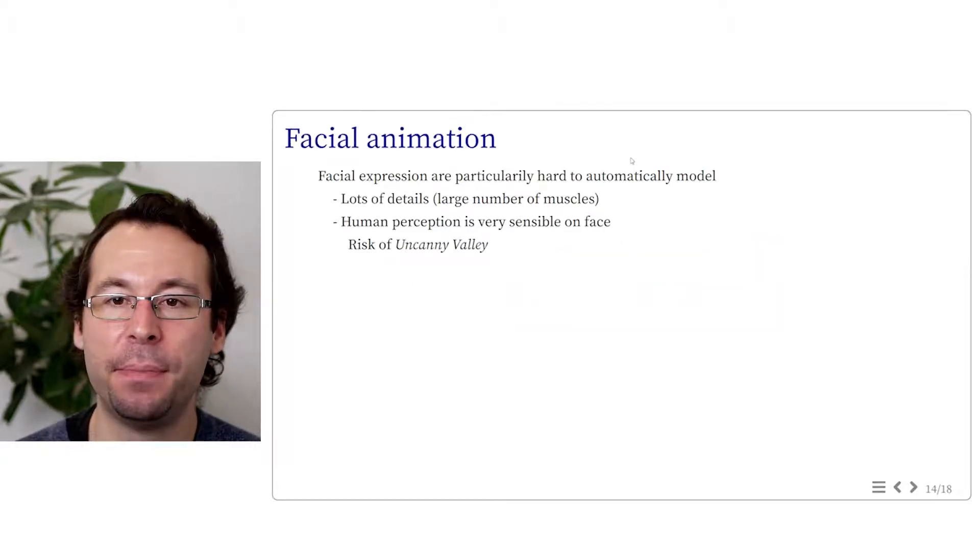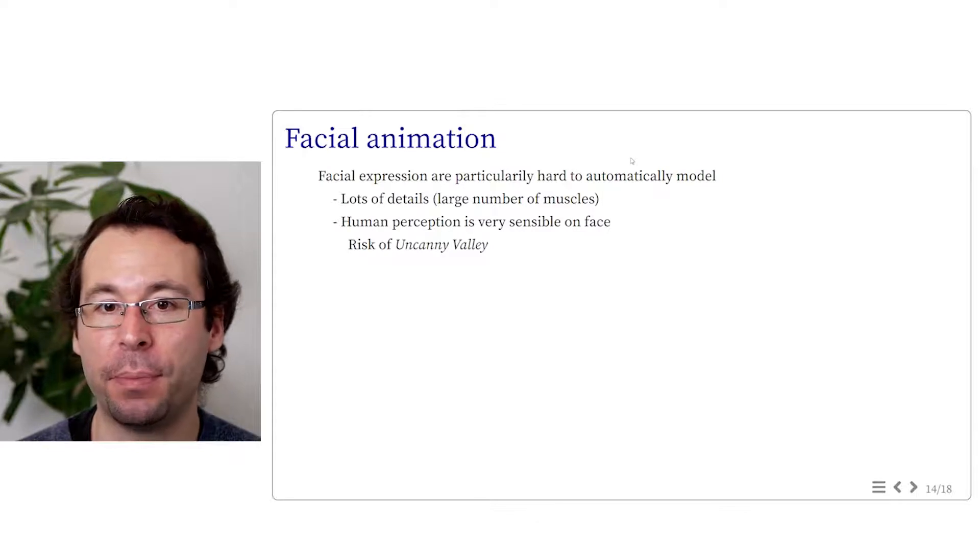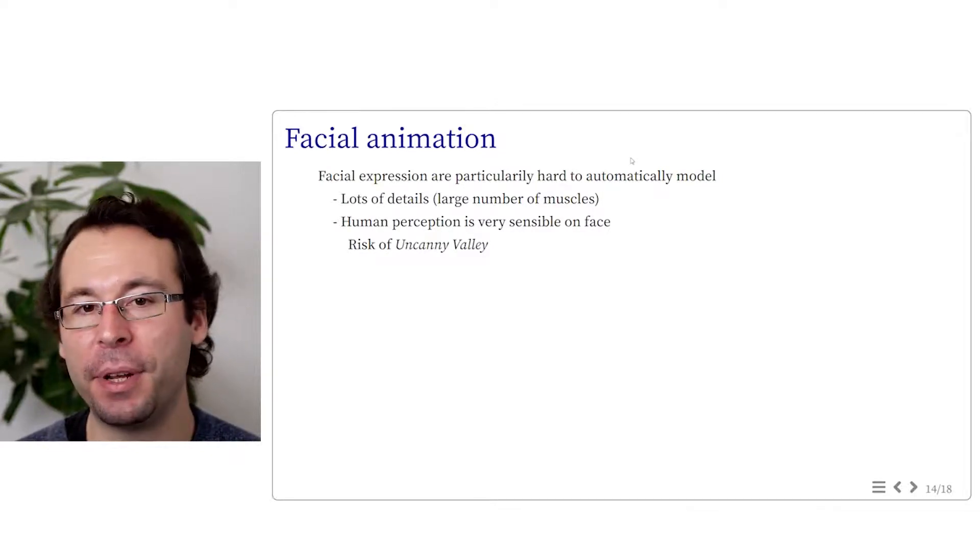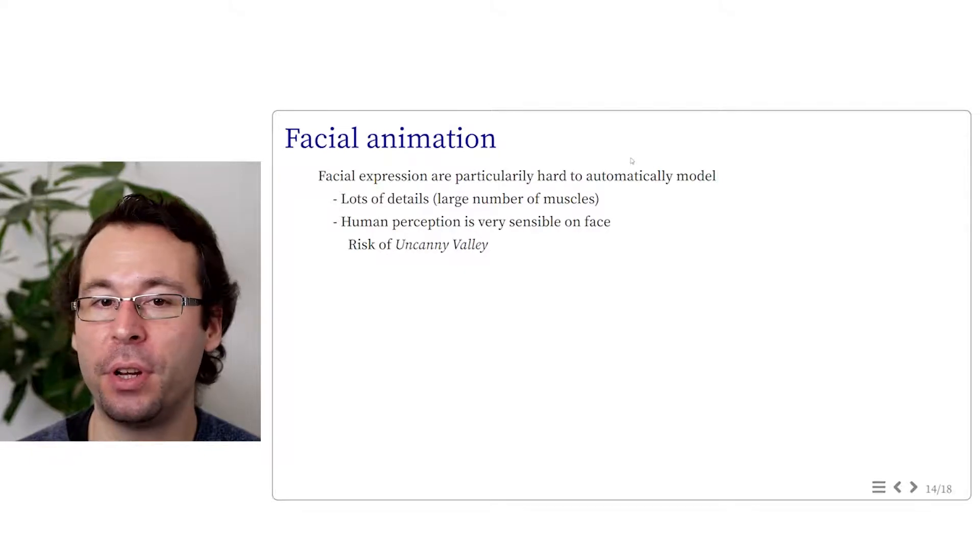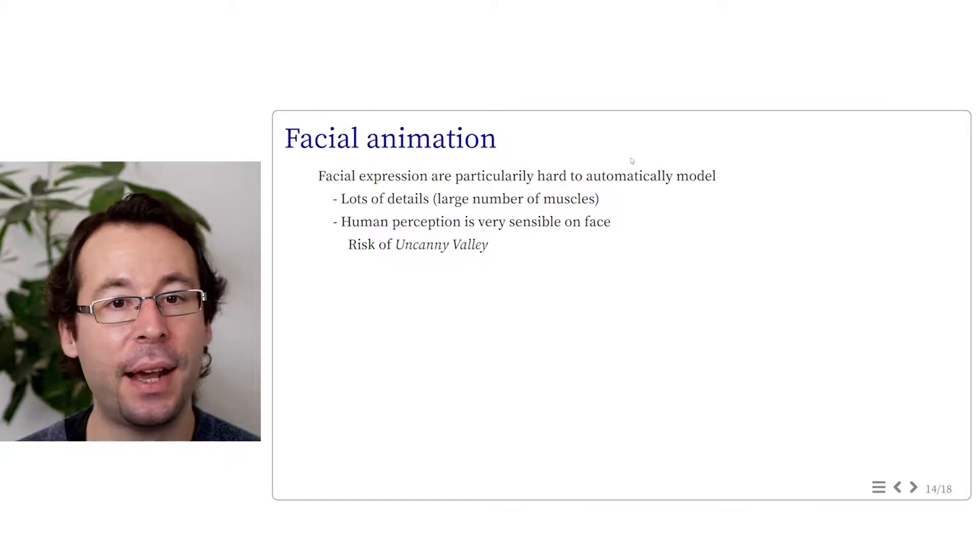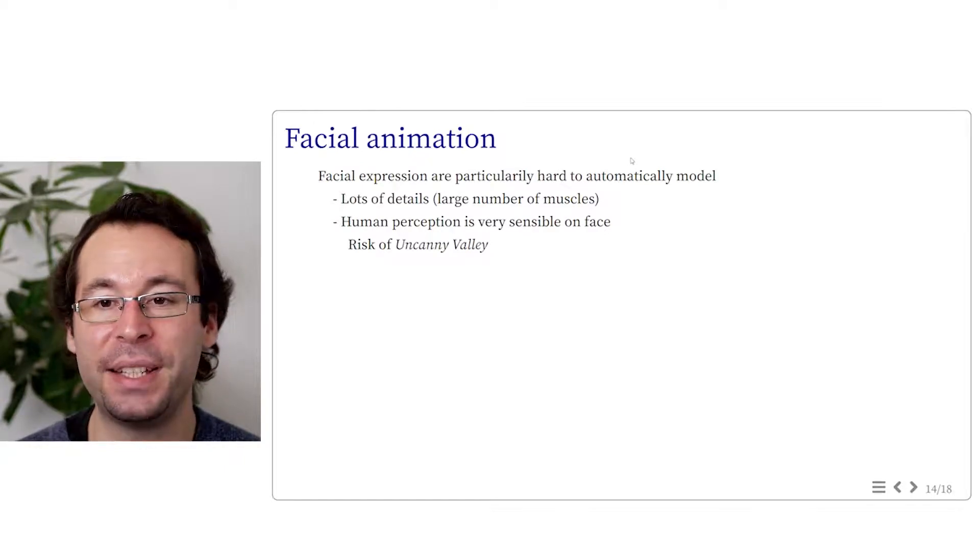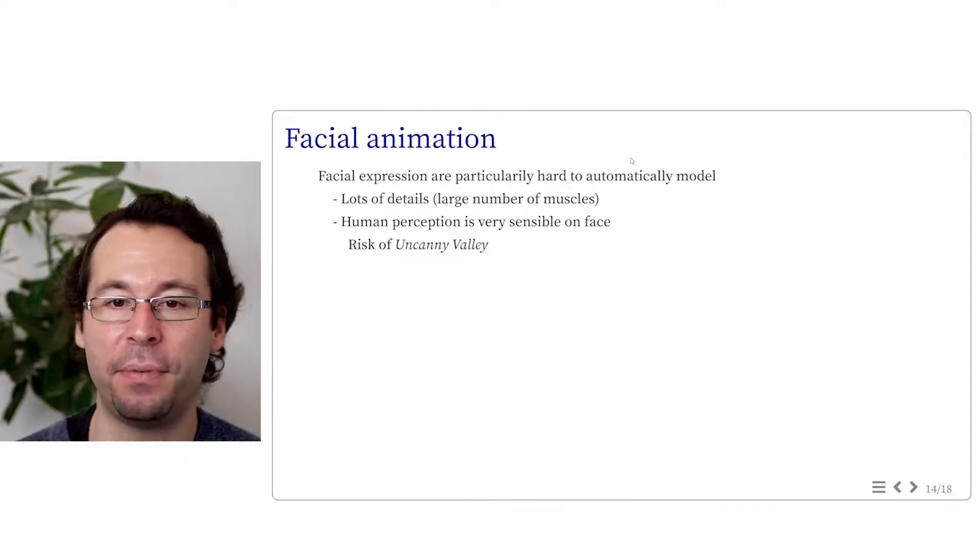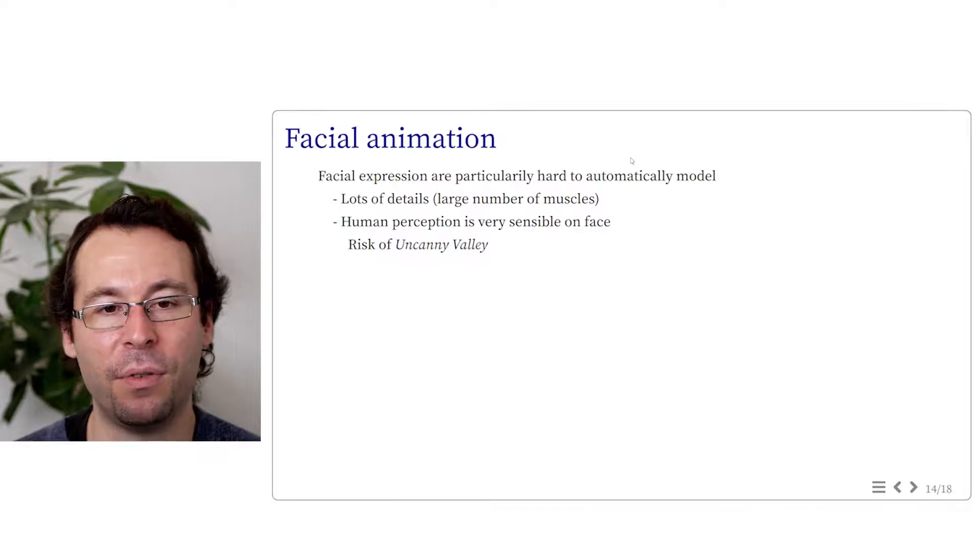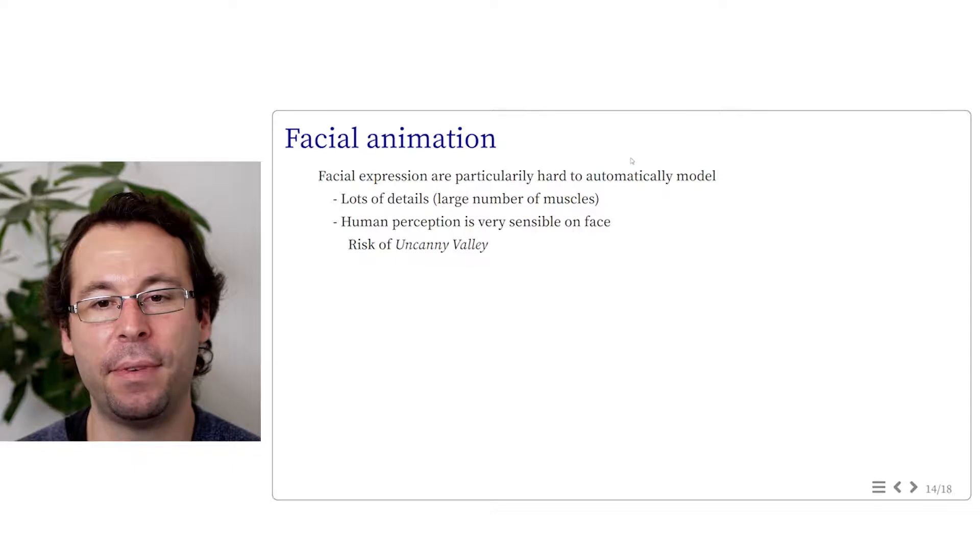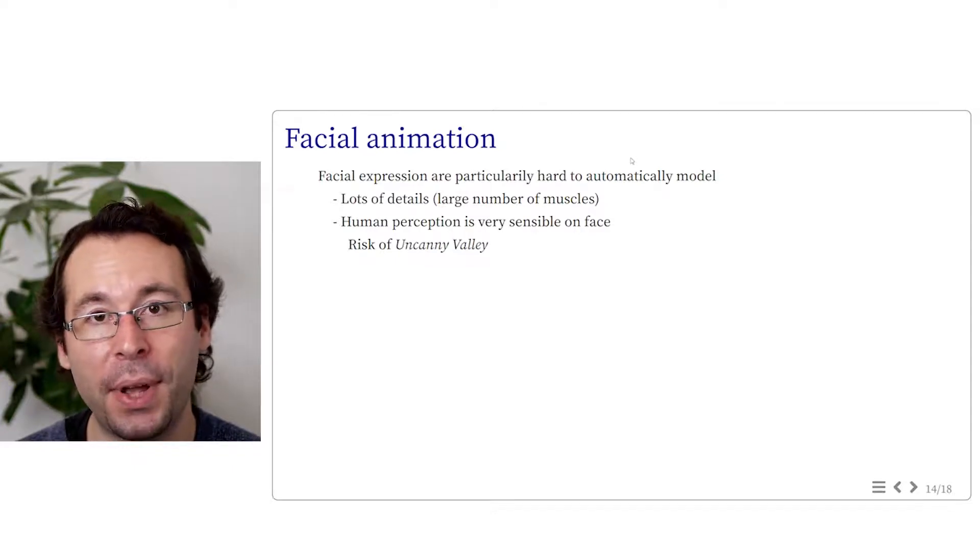Facial animation of humans is both very common in animation production and particularly hard to model. Human faces have a large number of muscles, about a hundred, so it can generate lots of facial expression. As humans, our perception is extremely sensible to the face of other humans, much more than for other parts of the body or for non-human faces. Which means that animating plausibly a human face requires much more care than animating other types of elements.